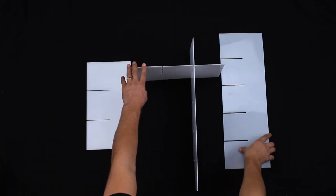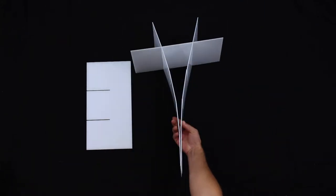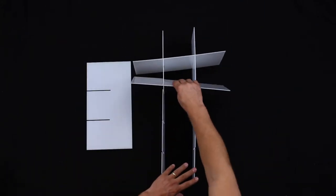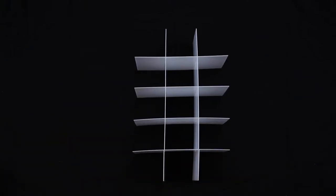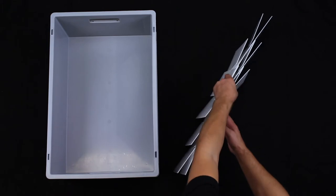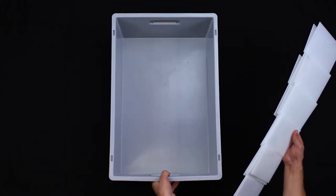Next, flip the dividers over and place the rest of the short dividers into the remaining slots. The easiest way to put the dividers into the box is by folding and placing them inside diagonally.